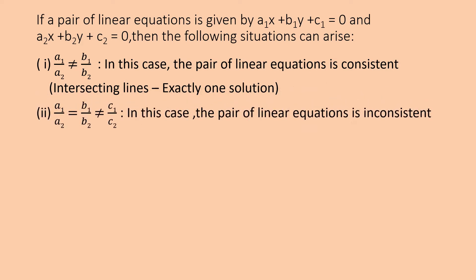Second condition: if a1/a2 = b1/b2 ≠ c1/c2, where a1, a2 are coefficients of x, b1, b2 are coefficients of y, and c1, c2 are the constant terms of the given pair of linear equations. In this case, the pair of linear equations is inconsistent — the lines formed by the two equations are parallel lines, meaning the pair of equations has no solution.